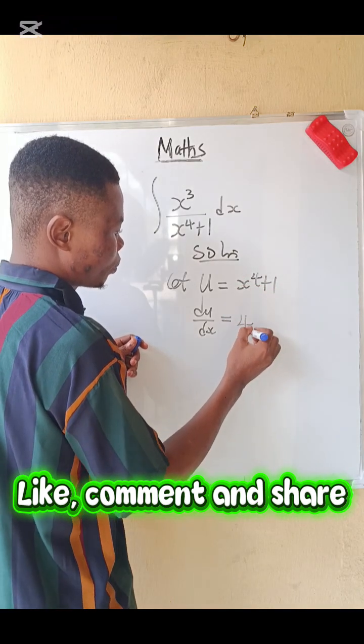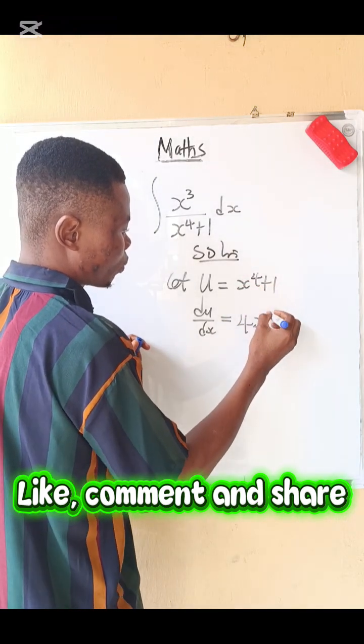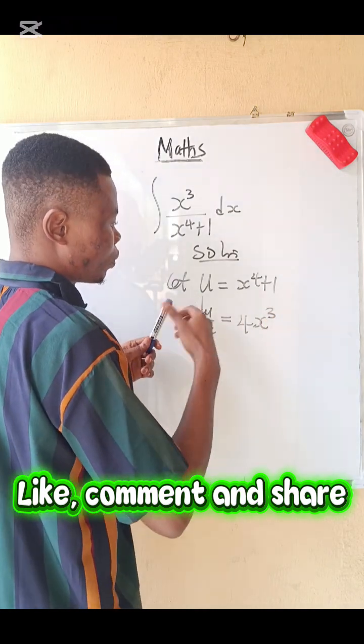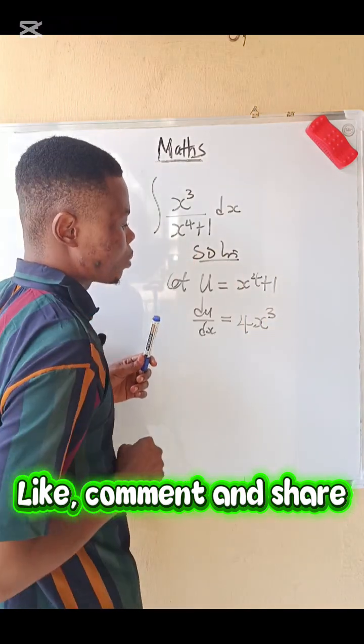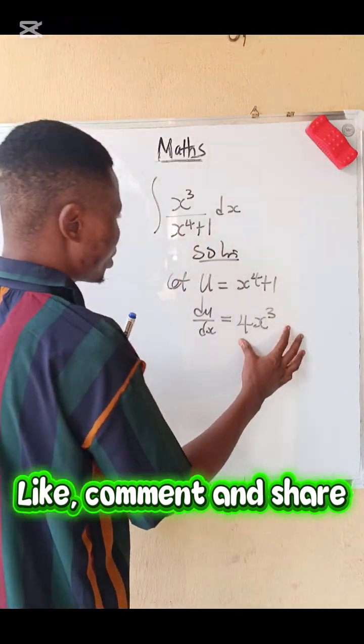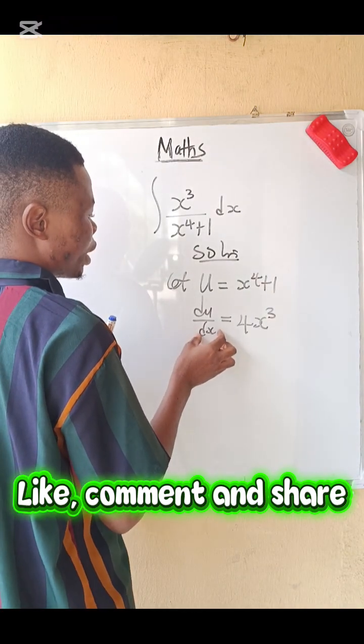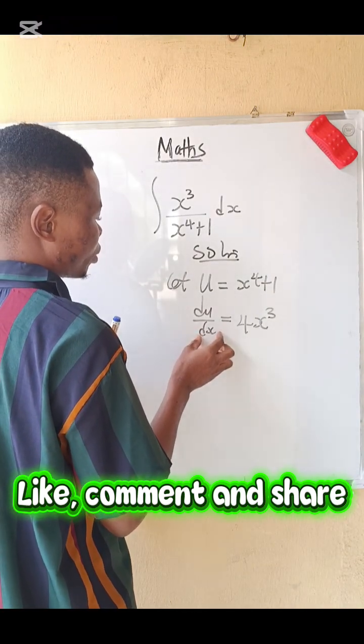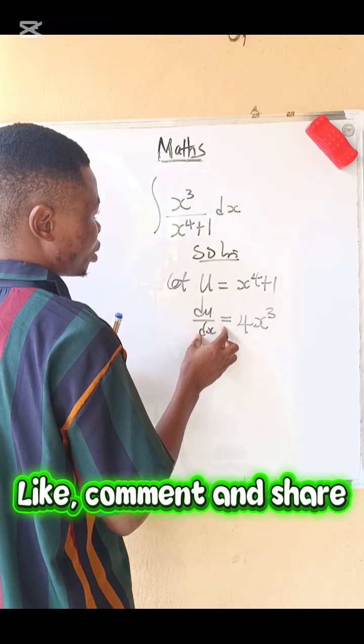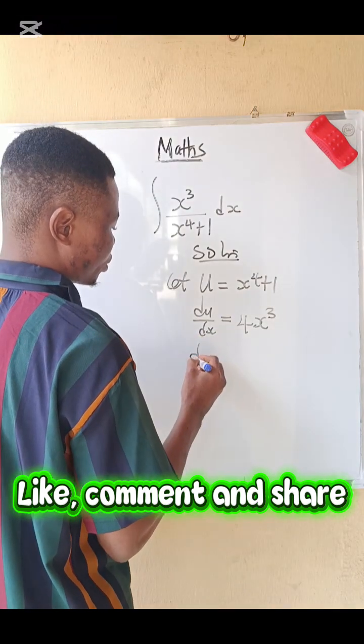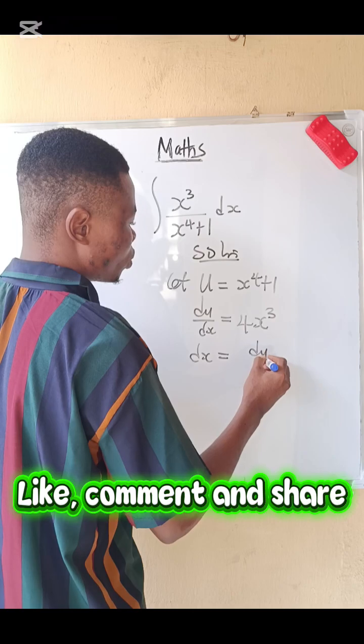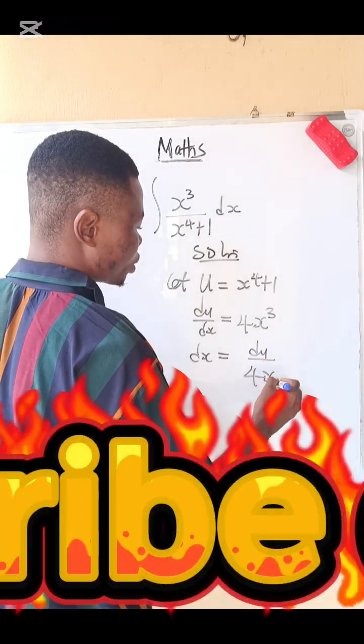Then take away 1 from 4, we have 3. And when you differentiate a constant, the answer is zero, so we're left with this. So what next do we do? Make dx the subject of the formula. So dx equals du over 4x cubed.